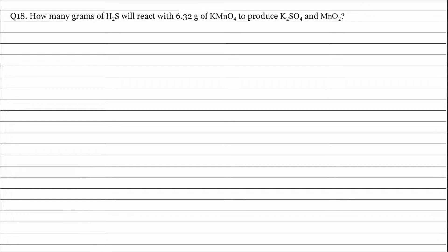The reaction can be written as H2S plus KMnO4 forming K2SO4 plus MnO2. The oxidation number of sulfur in H2S is minus 2 and oxidation number of sulfur in K2SO4 is plus 6. Therefore change in oxidation number of sulfur is 8.